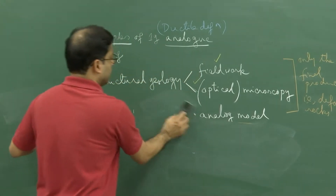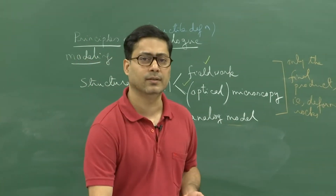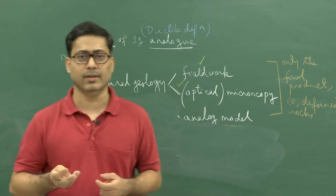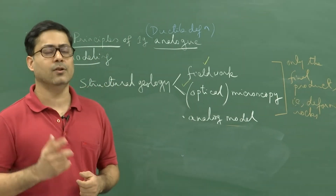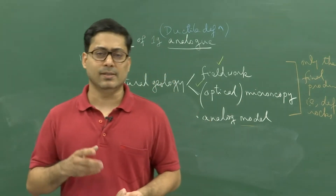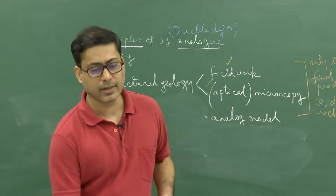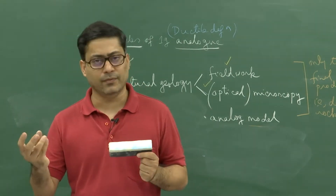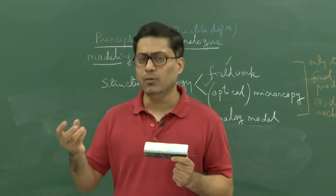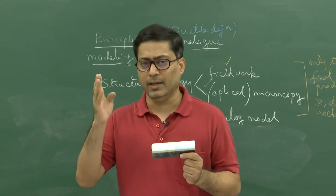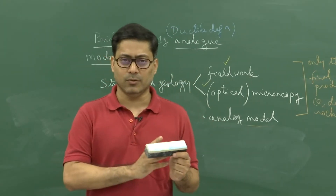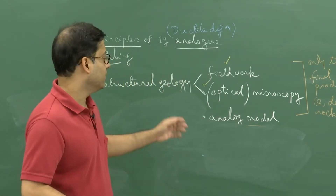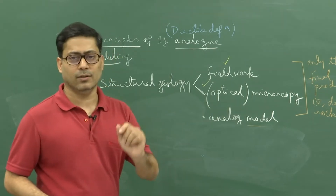Why not take the real hard rock for analog modeling? The answer is that real hard rock is very difficult to deform — it requires high pressure, high temperature, and specific fluid activity, which is not impossible but certainly difficult and expensive. Instead of taking a real hard rock, I take a soft deformable material. At a much lower stress level I can deform it, and then make a one-to-one comparison between the real deformed rock and the laboratory simulation.